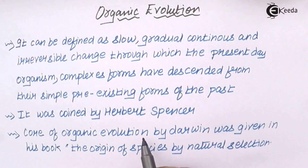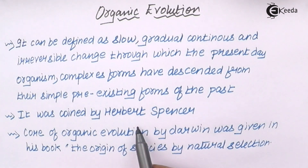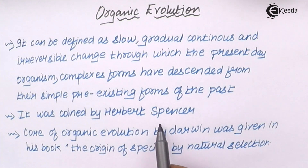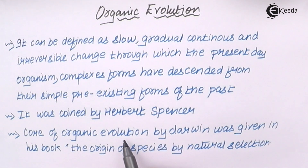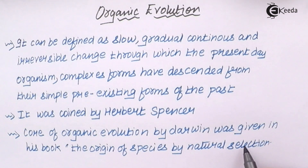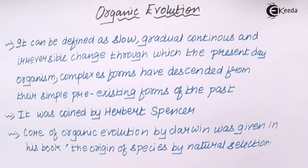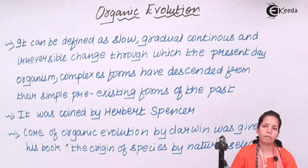The term 'organic evolution' was coined by Herbert Spencer. The core or fundamental principles of organic evolution were given by Darwin in his book 'The Origin of Species by Natural Selection'.